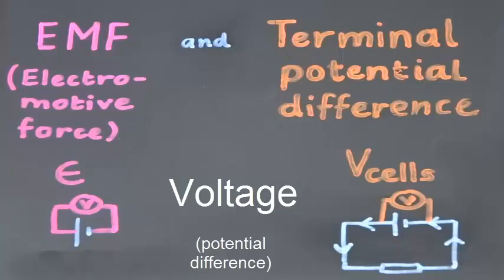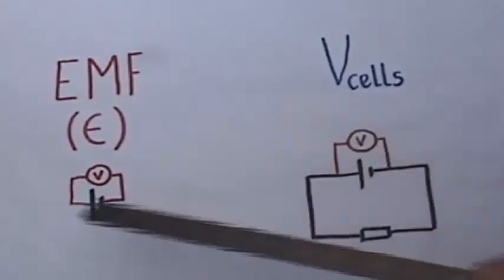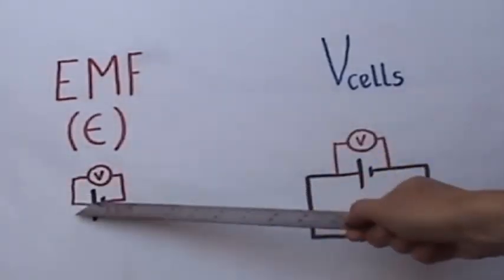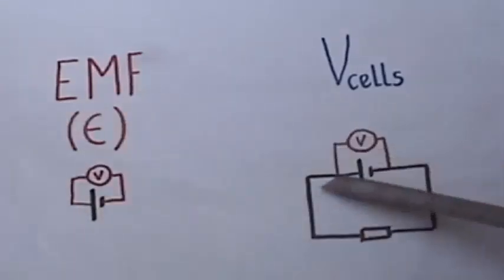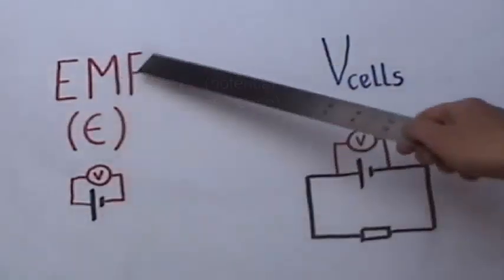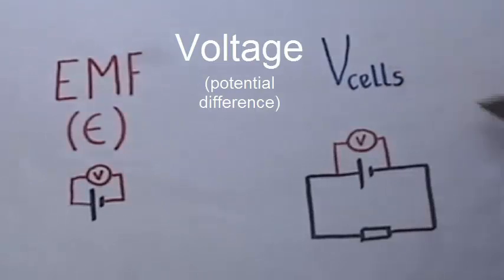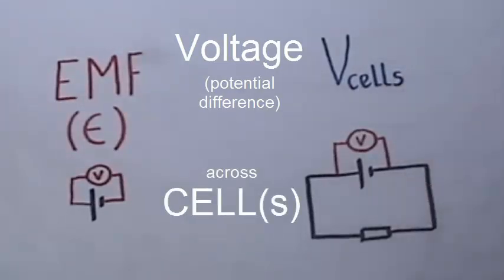So we measure both of them using a voltmeter. And the voltmeter is placed across the cell in both cases. So both of them measure the voltage, the potential difference, across a cell.